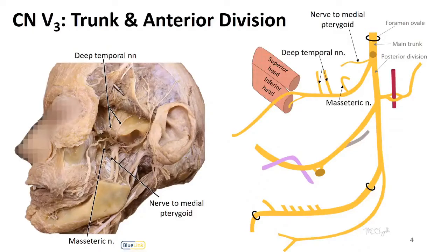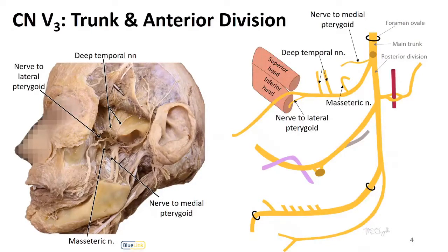Next is the masseteric nerve, and both in this image on the right as well as in the donor, you can see it's been cut because we've removed the masseter muscle to see as deep as we are in this space. Next, we see the nerve to lateral pterygoid, and this is coming off in the area of lateral pterygoid where this anterior division will course between the superior and the inferior heads of the lateral pterygoid. So that's what we're seeing right here, near to that space, we see the nerve to lateral pterygoid.